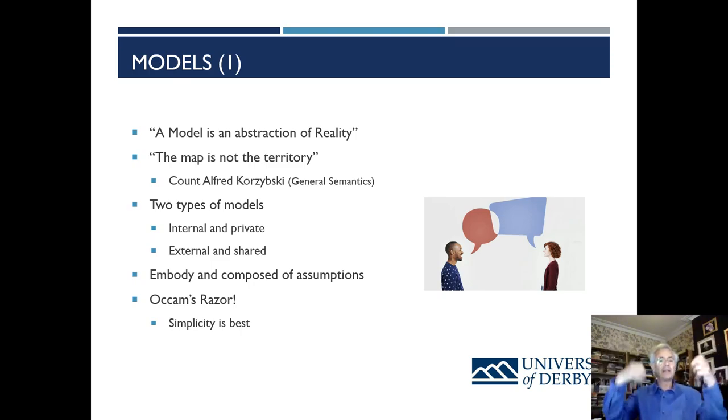So hold those two thoughts: models are abstractions of reality, and the map is not the territory. Now, as we think about models, there are two sorts. They're the models we have in our heads. Because remember, what is in our heads is not reality. Reality is out there. What's in our heads is what we've heard through our ears, what we see with our eyes, touch with our fingers, smell with our nose, taste with our tongue. But that is an incredible reduction in the richness and complexity of what's out there. And then we have the external models, the shared, useful models we use for communicating, discussing, and finding things out.